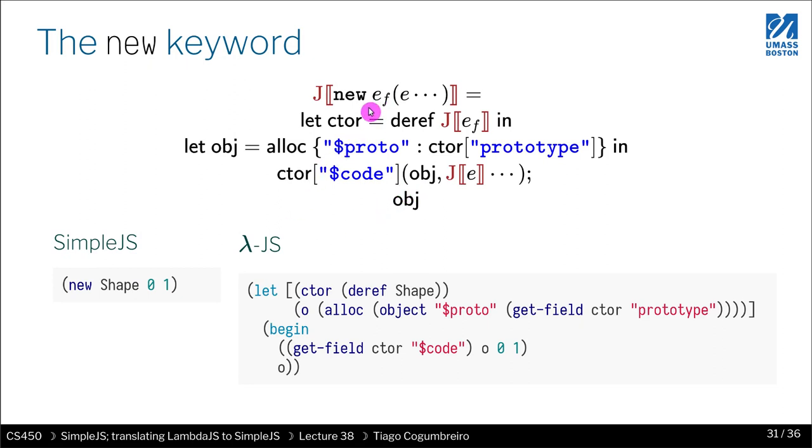The idea is we have an expression that is the function. Then we have the arguments being passed to the new, right? Because this is a function, we need to dereference it. And because this is an expression in the source language, we need to translate it. We translate the expression and dereference it so that we get the function object. Because it is a function object, we need to then allocate the new object with the proto fields. In lambda.js, it's not underscore underscore proto, it's dollar proto. That's what they decided, so that's what you should be doing.